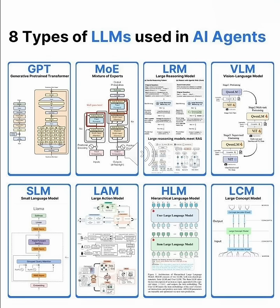First, GPT — the foundation model that started it all. Generative pre-trained transformers use the iconic transformer architecture. They're pre-trained on massive datasets, then fine-tuned for specific tasks. Think ChatGPT, GPT-4. These are the versatile generalists powering most AI applications today.